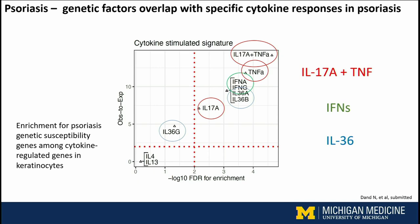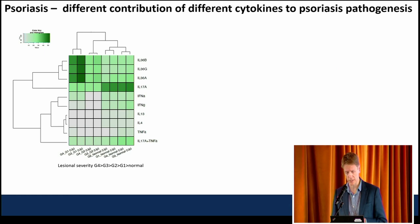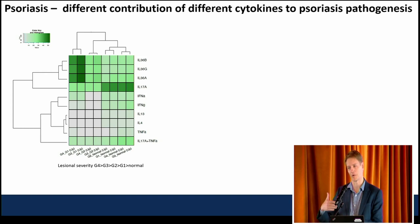We've been working on a dataset looking at lesional severity. It's a bulk RNA-seq dataset looking at gene expression in psoriatic plaques, graded based on redness, thickness, and scaling. There are four different grades: levels 1 through 4, with level 4 being the thickest and most inflamed. When we compare these different lesional severities back to baseline, we can appreciate that the IL-17 signal is really associated most strongly with the disease itself, not so much with the severities.